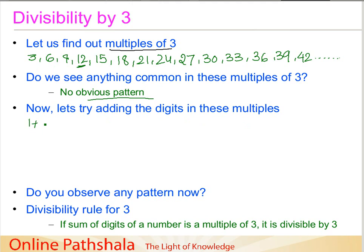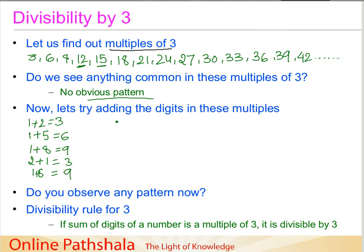So 1 plus 2 equals 3. The next one, 15: the sum of digits is 6. Then 1 plus 8 is 9. Then 21: 2 plus 1 is 3.